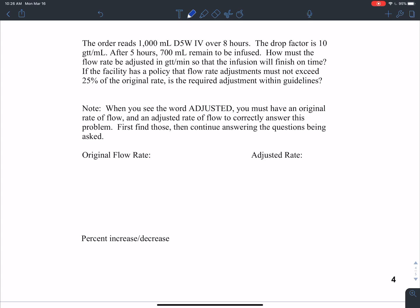We're going to look at flow rates that are adjusted. So the order reads 1,000 milliliters, dextrose 5% water, IV over 8 hours.